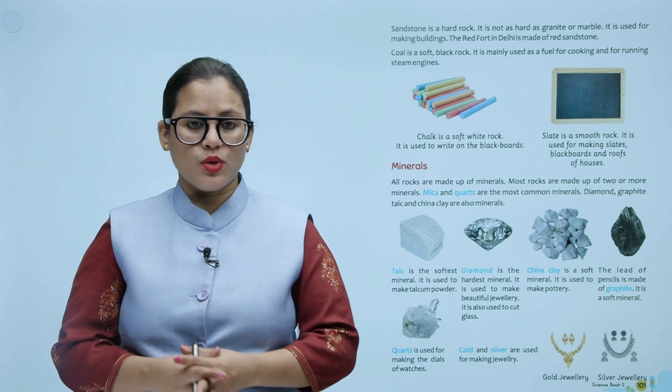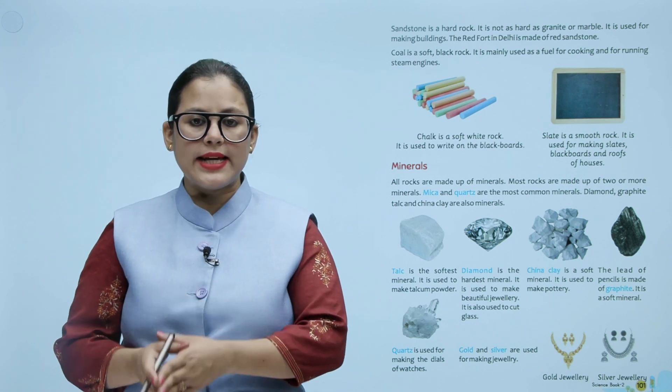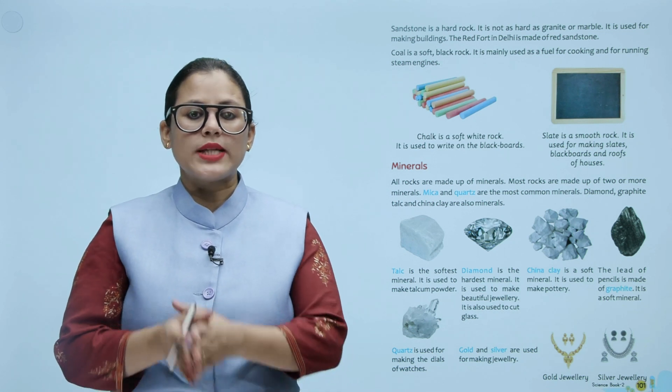Chalk is a soft white rock. It is used to write on blackboards. Chalk to aapne sabhi dekha hai — soft white color ki rock hai jisko blackboard mein use karte hain. Slate is a smooth rock. It is used for making slates, blackboards and roofs of houses. Isi tarah se slate bhi aik rock hai jisko slates banane ke liye, blackboards banane ke liye aur ghar ki roofs banane ke liye bhi use kiya jata hai.